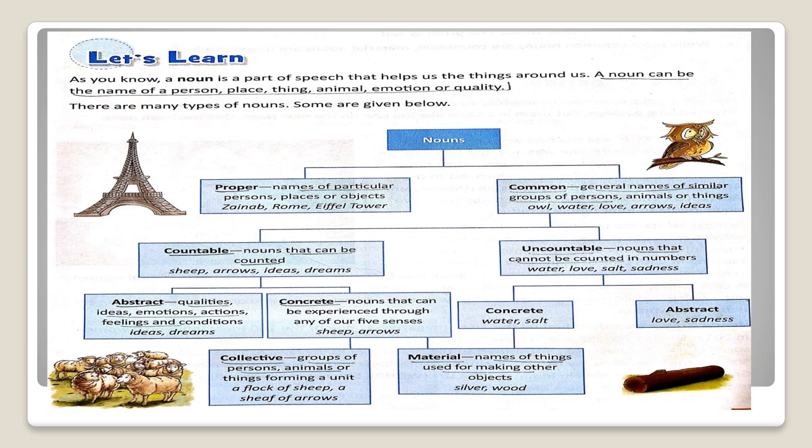Common noun. General names of similar groups of persons, animals or things. Owl, Water, Love, Arrows.